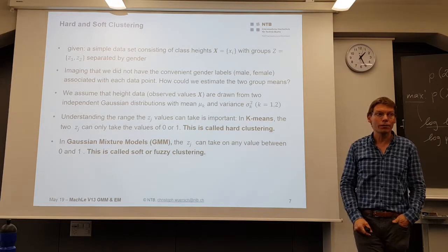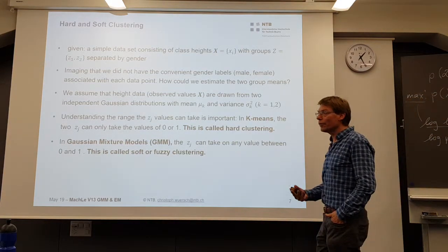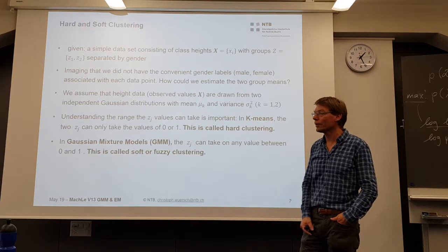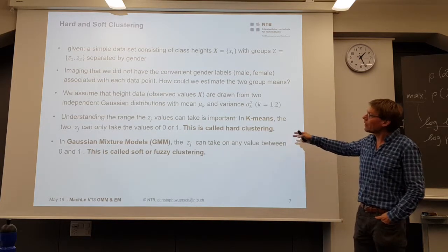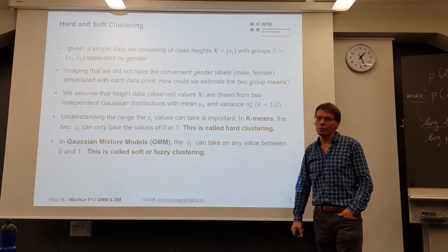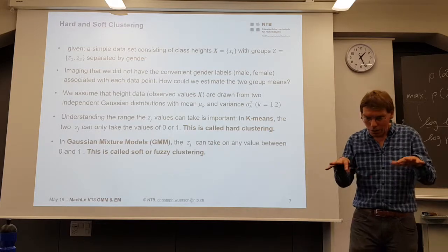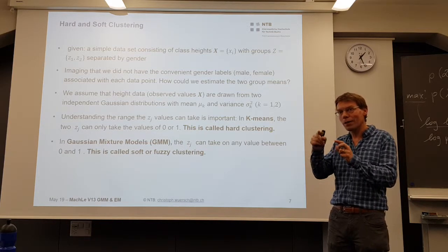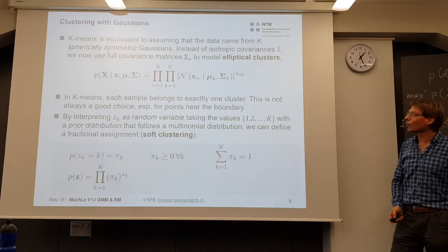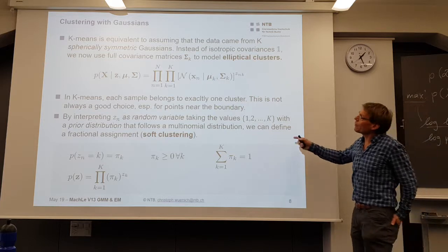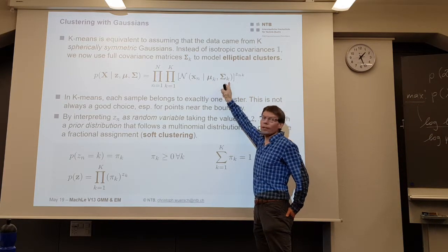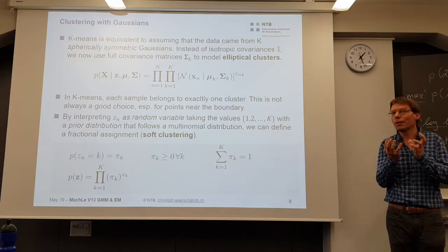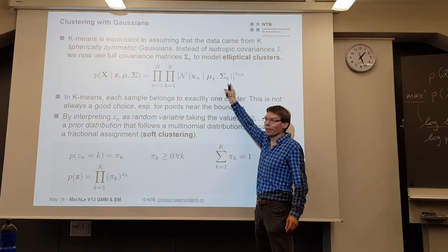Now we can go a step further and say this assignment could also be a probability — that's what I mean by soft clustering. Instead of assigning only one cluster to a given data point, we assign a probability such that the sum of probabilities equals one. This gets us closer to the Gaussian mixture model, where overlapping Gaussians are used and the amount of assignment to each Gaussian is given by the probability of how close the point is to the center.